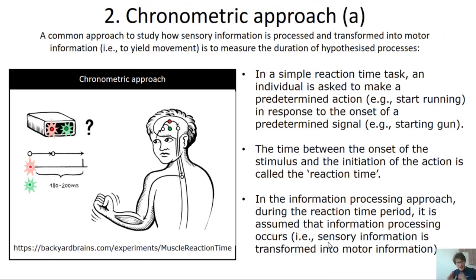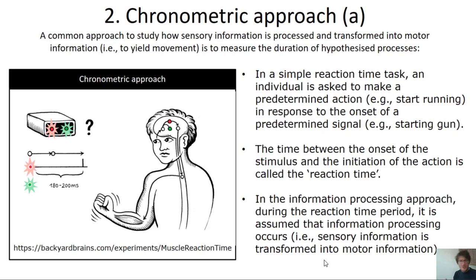That concludes the part about the computer analogy in information processing. The second key concept to address is the chronometric approach. The chronometric approach is the idea that we can measure the amount of time it takes to go through the various processing stages involved in information processing, using various types of tasks that require different combinations of these processing stages.